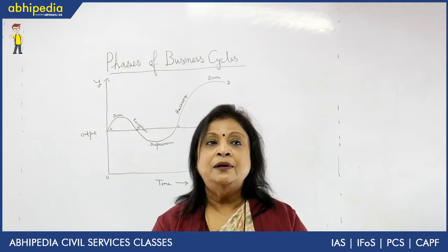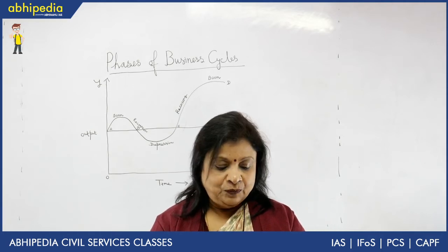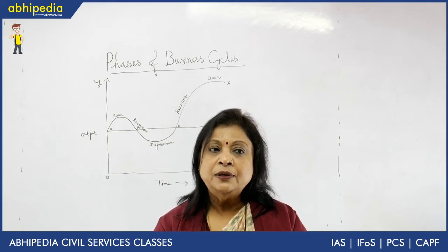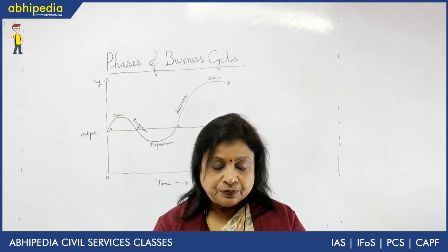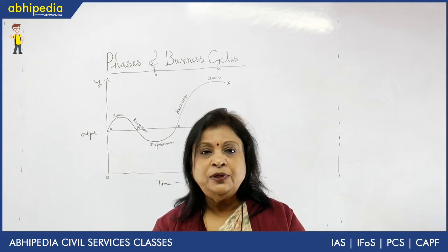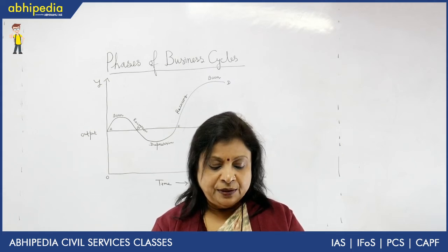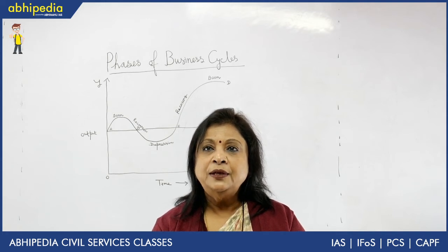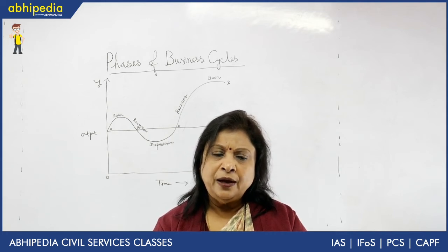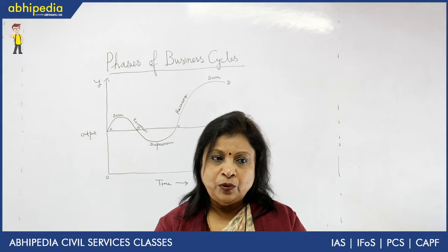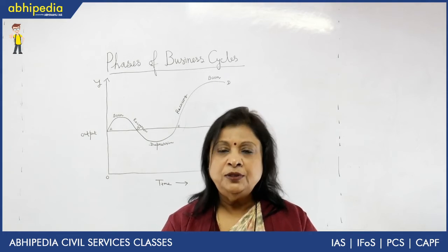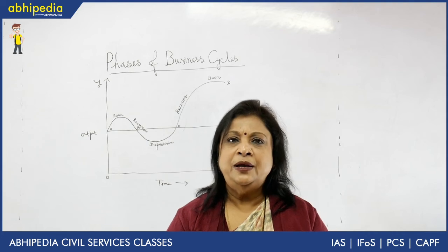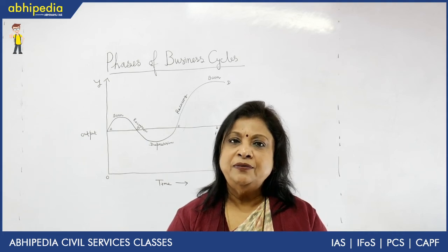The second built-in measure is unemployment insurance, provided by many economies. During boom, unemployment insurance payments are less. During the depression phase, the amount of unemployment benefits is more. So these are the built-in stabilizers in fiscal policy.